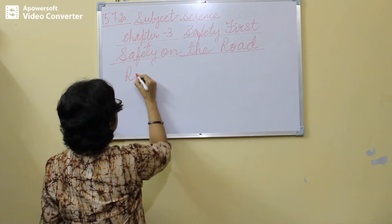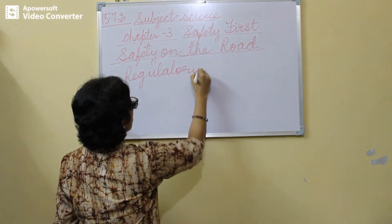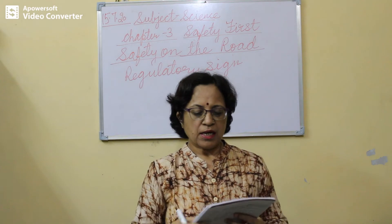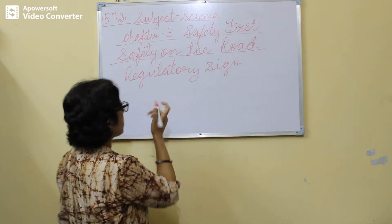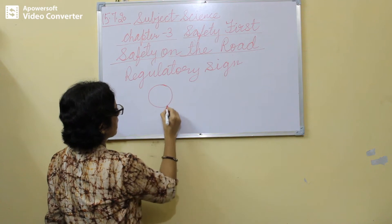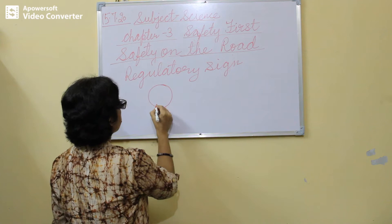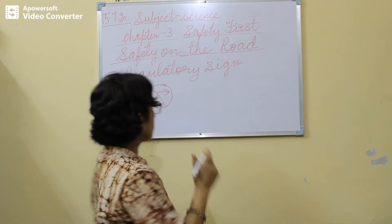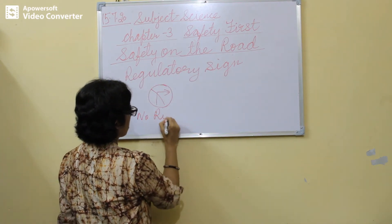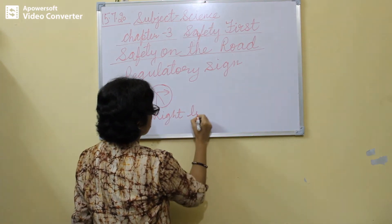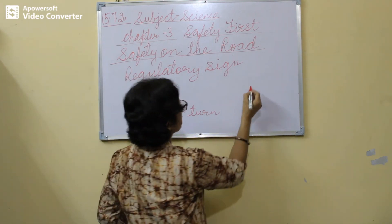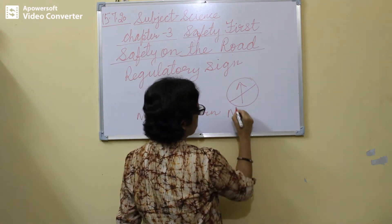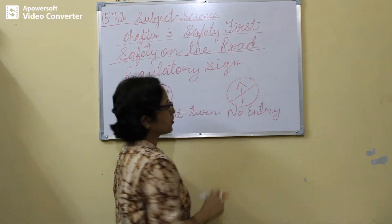The first is the regulatory sign, which you have to follow. Regulatory signs are always in a circle. For example, a right turn sign in a circle means no right turn. There is also an entry sign, and when it is crossed out, it means no entry — you don't have entry in that area.